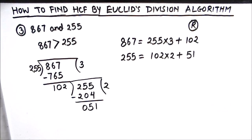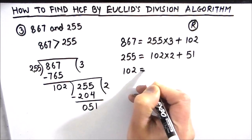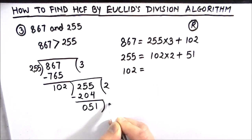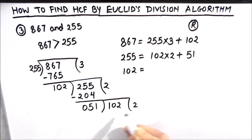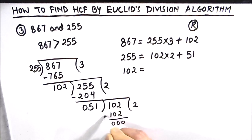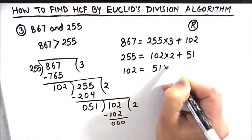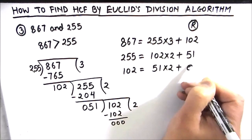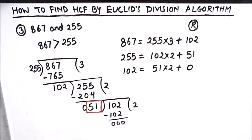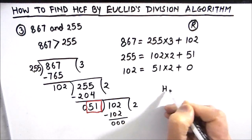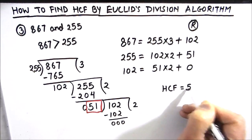51 times 2 is 102 and the remainder is 0. So we write 102 = 51 × 2 + 0. The divisor by which we get remainder 0 is the HCF. So the HCF of 867 and 255 is 51.